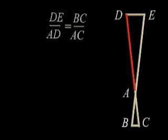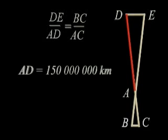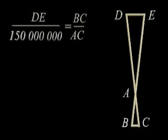AD is the distance from our pinhole to the sun. And thanks to the work of Aristarchus and the many philosophers and astronomers who came after him, we now know that the distance to the sun is 150 million kilometers. So AD equals 150 million.